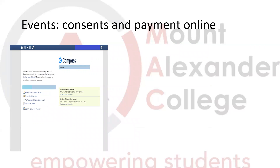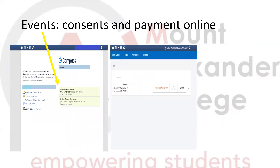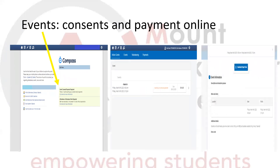For events, you can provide consent and payment via the browser. You'll see a particular box that will say 'Event Consent or Payment Required'. You simply click that and it will come up onto another page which tells you how much the event costs, if there's any cost, and whether it's awaiting payment and/or consent. You click where it says 'Awaiting Payment or Consent' and it will take you to the next page where you can provide consent and/or payment for that particular event.